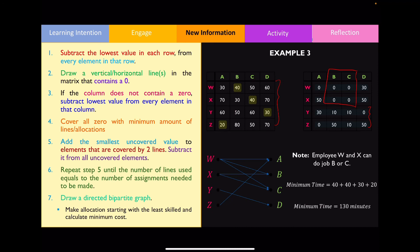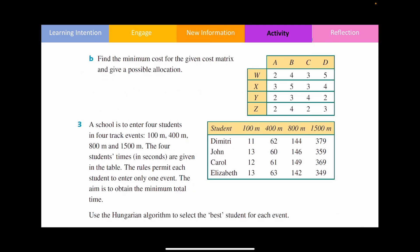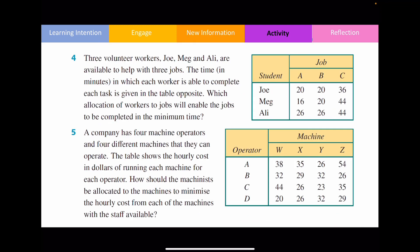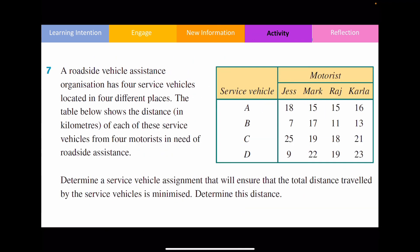By now you should be fairly confident at applying the Hungarian algorithm to find the minimum cost associated with completing all jobs. Please answer all the questions from exercise 15B to get further practice. This is the end of the video — thank you for watching, and I'll see you in the next one.